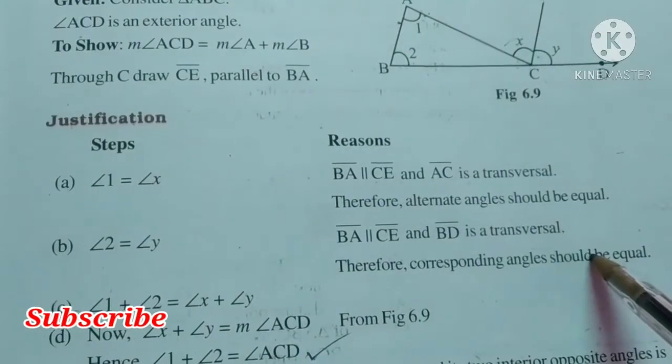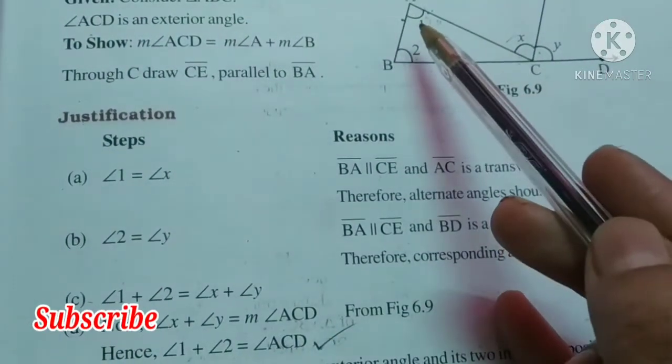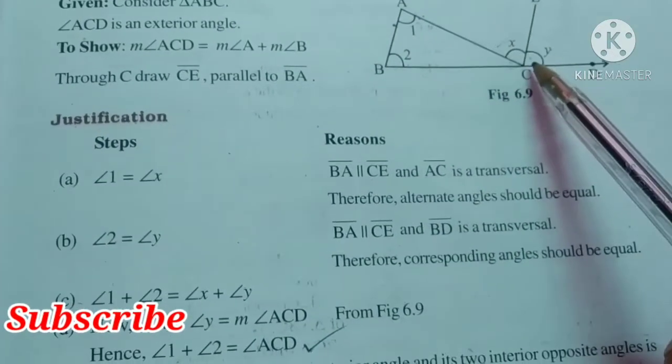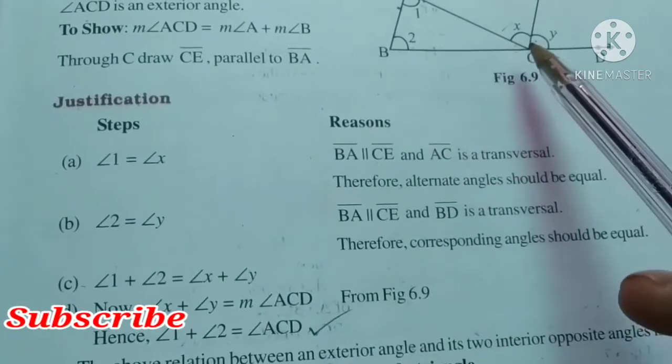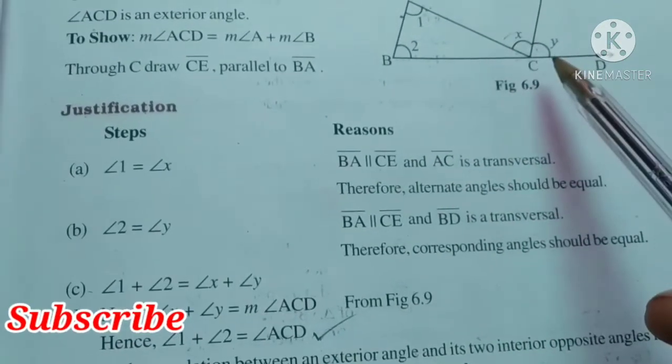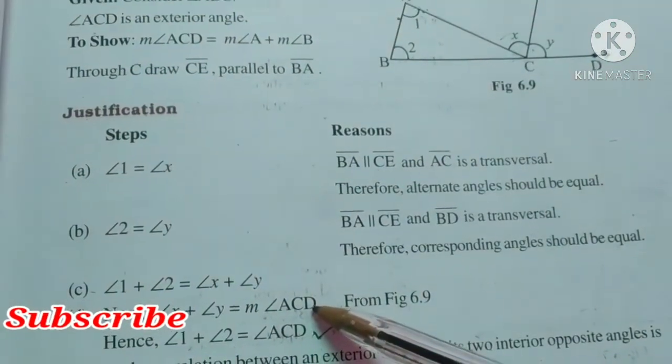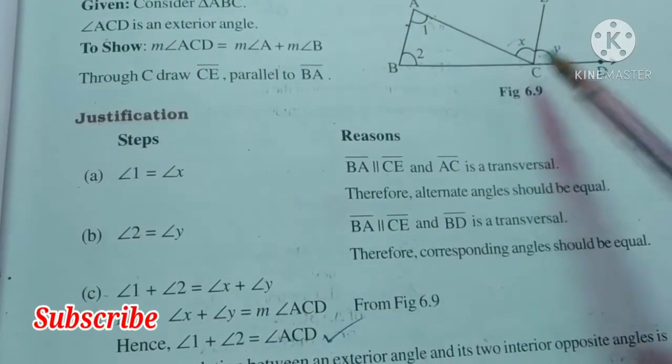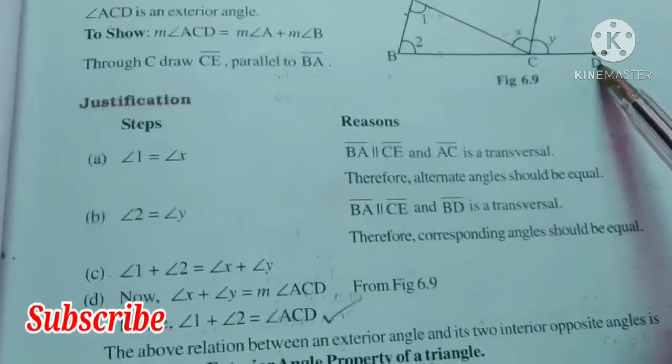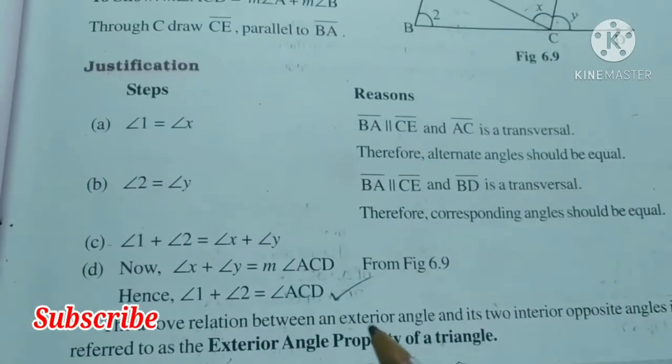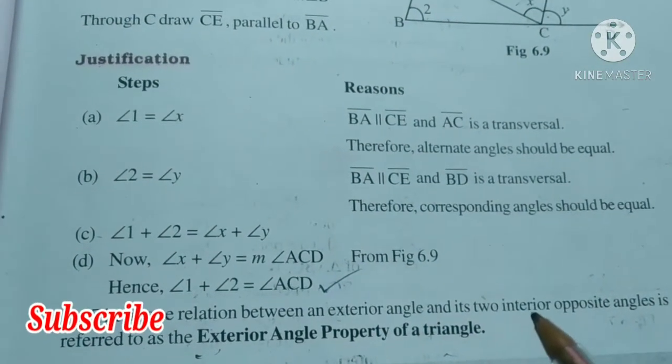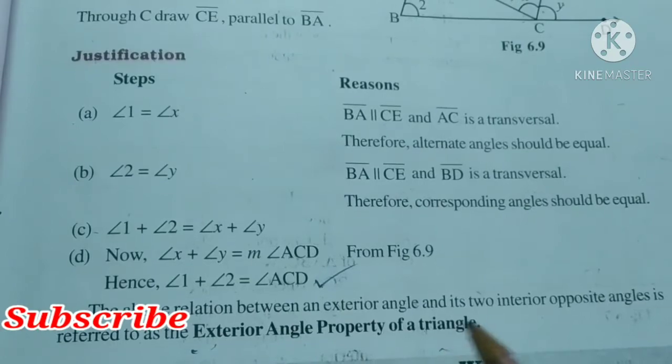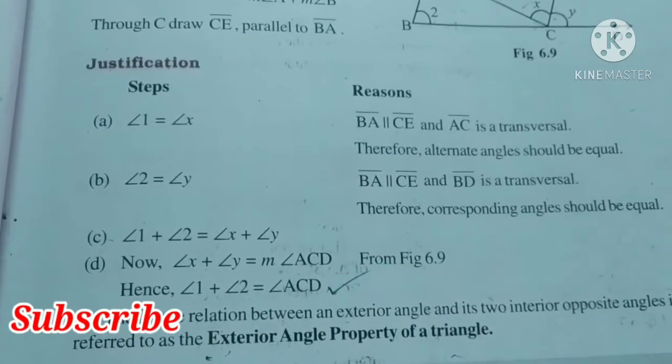See part C: angle 1 plus angle 2 is equal to angle X plus angle Y. Now last, angle X plus angle Y is equal to measure of angle ACD. Hence, angle 1 plus angle 2 is equal to angle ACD. So we have proved the above relation between an exterior angle and its two interior opposite angles, which is referred to as the exterior angle property of a triangle. So this is a property.